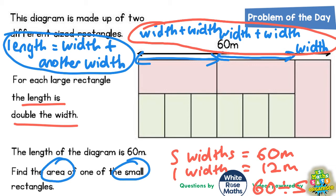We can start writing this onto the diagram now. So if this width is worth 12, the length of the pink rectangles are double the width. So double 12 is 24 which makes this distance worth 24 and this distance worth 24.